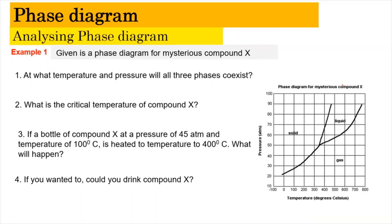Now we're going to look at an example — analyzing the phase diagram for a mysterious compound X. The question asks at what temperature and pressure all three phases coexist; this refers to the triple point. The triple point occurs at roughly 50 atm and at a temperature of 350 degrees Celsius.